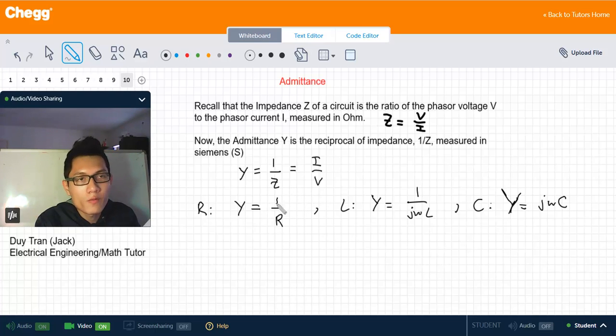For example, for a resistor the admittance is 1 over R instead of R for the impedance, and for an inductor it's 1 over jωL instead of jωL for the impedance.